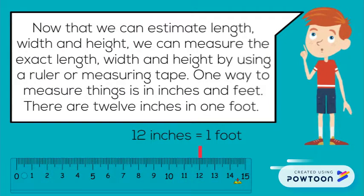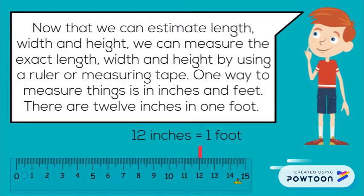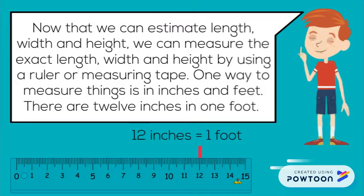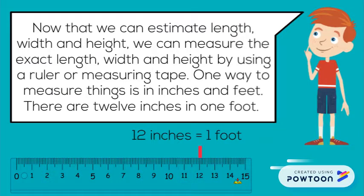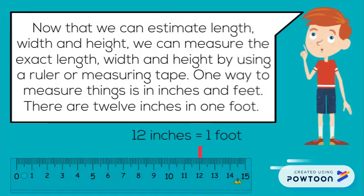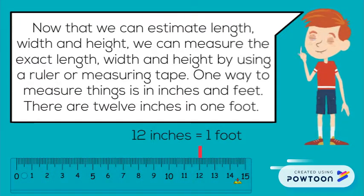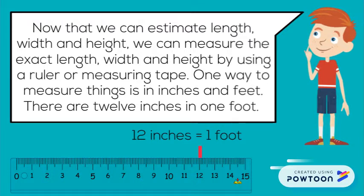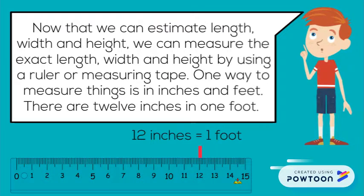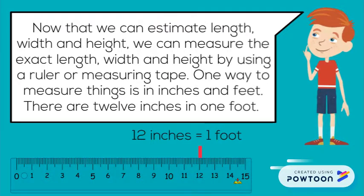Now that we can estimate length, width, and height, we can measure the exact length, width, and height by using a ruler or measuring tape. One way to measure things is in inches and feet. There are 12 inches in 1 foot. 12 inches equals 1 foot.